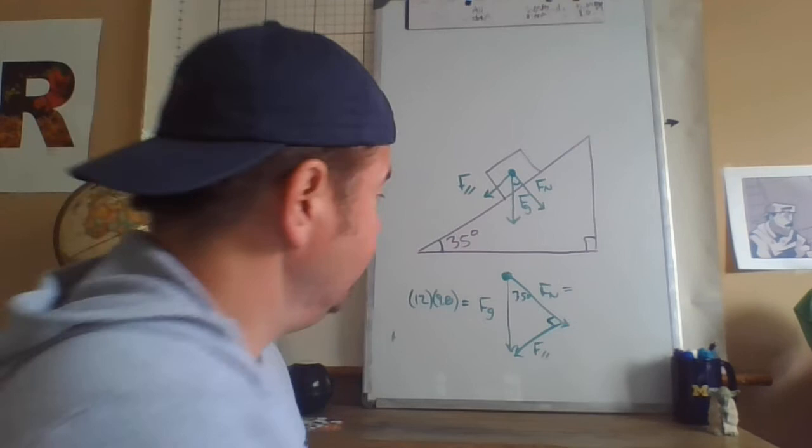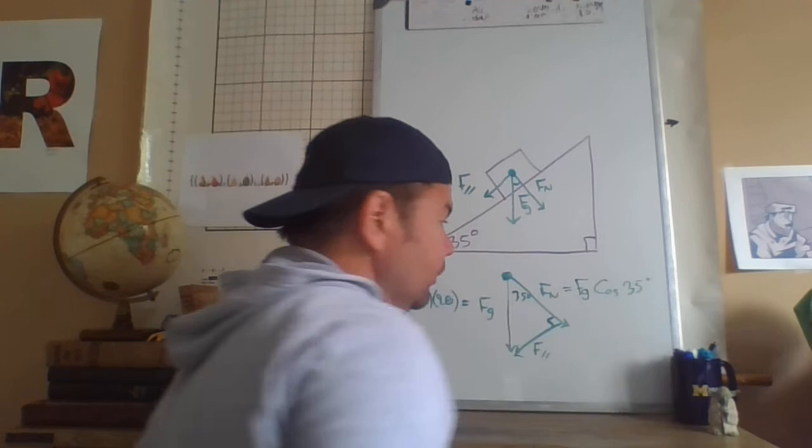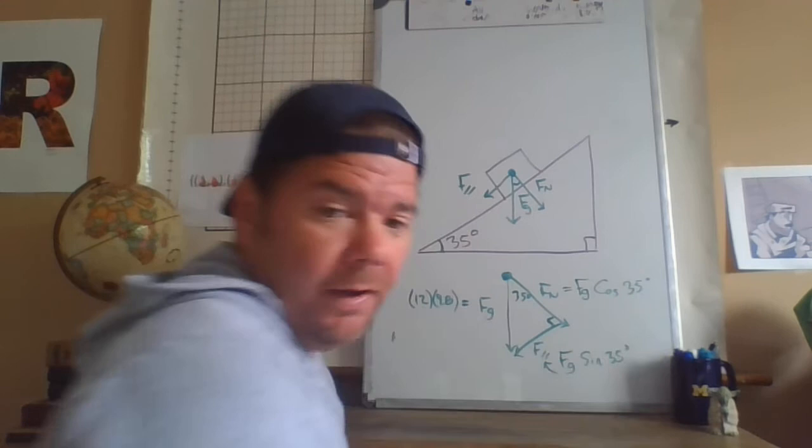Which means if we know that angle and we know this is the right triangle and we know this force of gravity, we can get what the magnitude of these other two components are. The normal force then would be, since it's the adjacent side to this 35, it would be the hypotenuse, the force of gravity, times the cosine of 35 degrees. The force parallel would just be the force of gravity times the sine of 35 degrees.